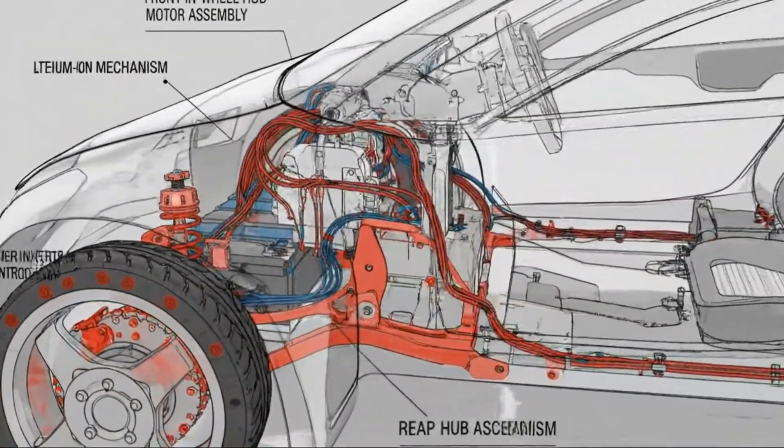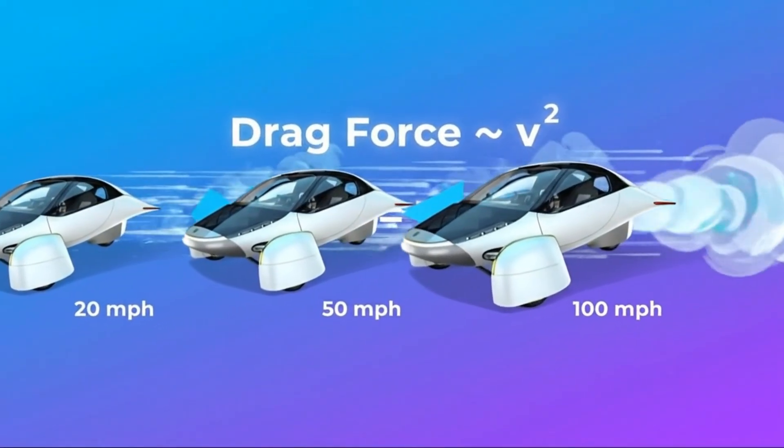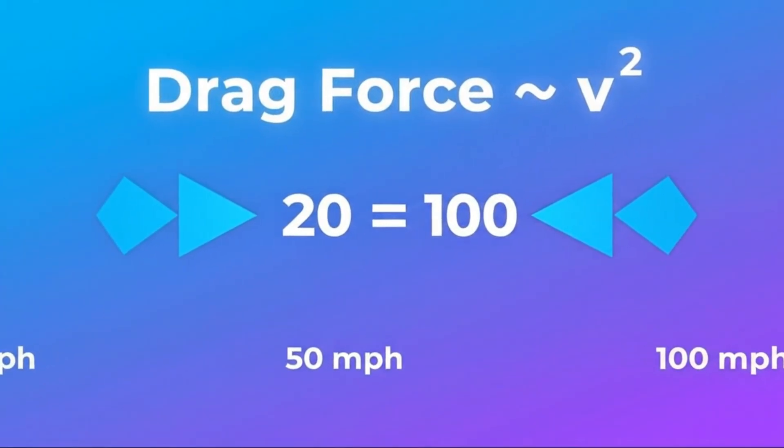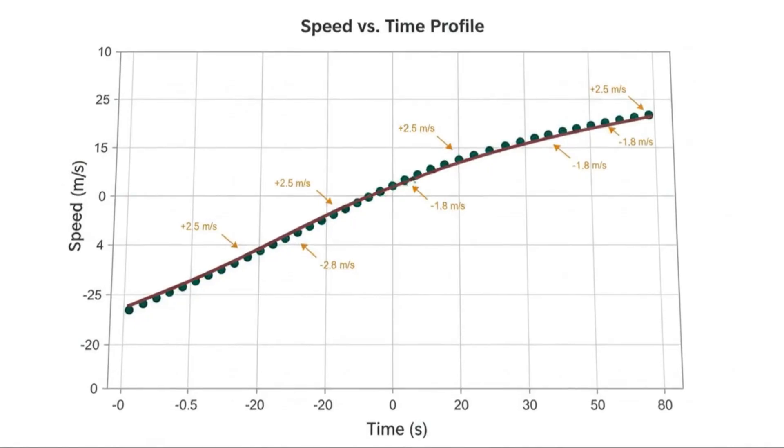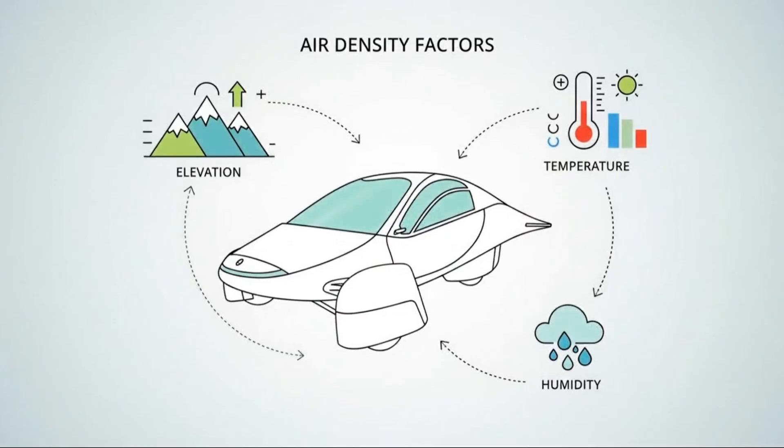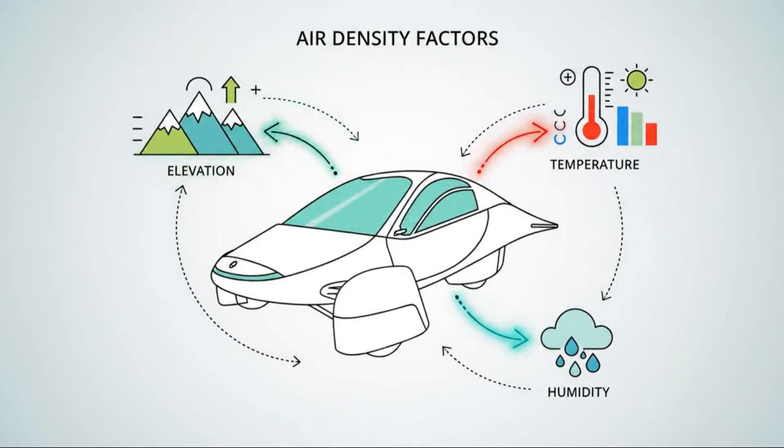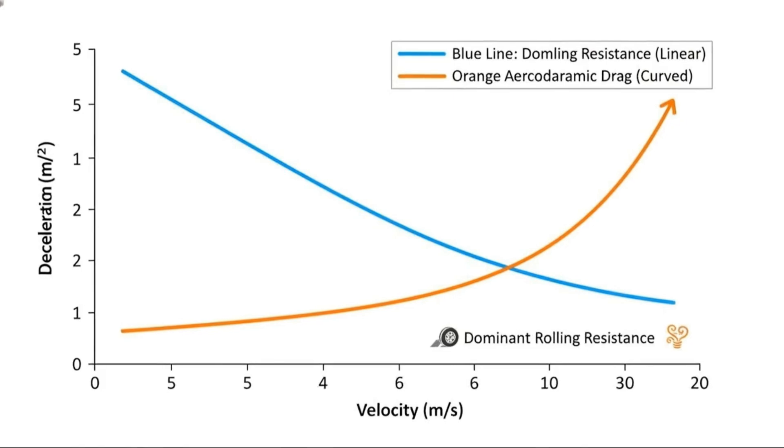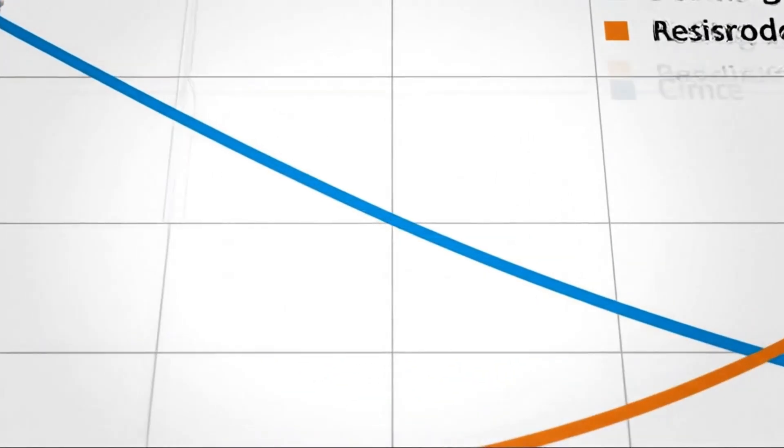Powertrain efficiency adds another critical layer. Instead of a traditional drivetrain with transmissions, differentials, and driveshafts, Aptera uses direct in-wheel motors. Power goes straight to the wheels with minimal losses. The result is efficient acceleration without the mechanical complexity that normally wastes energy. Regenerative braking captures momentum during deceleration, converting it back into usable electricity rather than letting it disappear as heat.